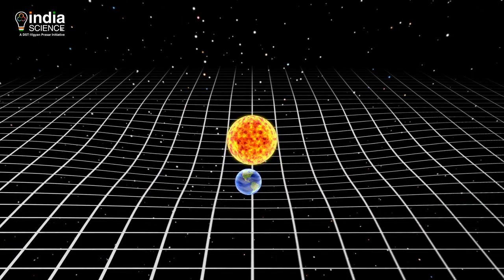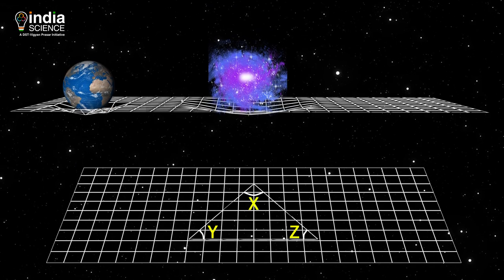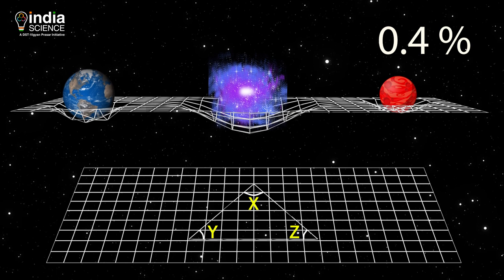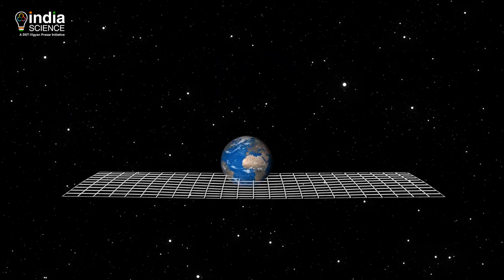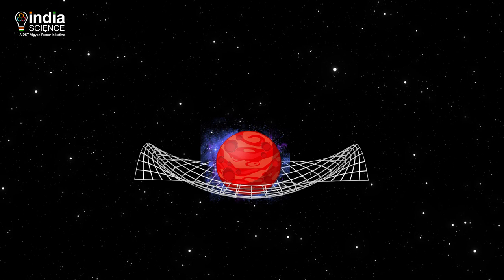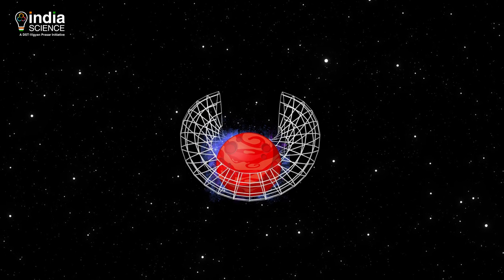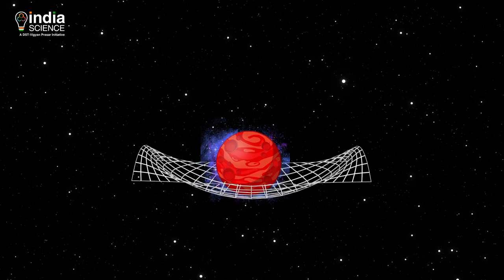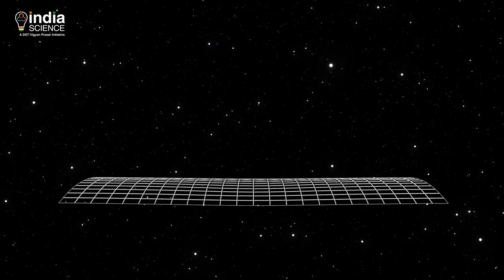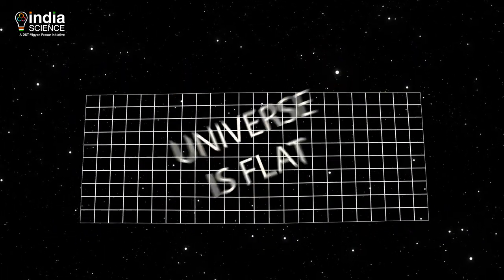Scientists measured this density. They found out that in both cases, the universe is flat, with a 0.4% margin of error. If the universe had just a little bit more mass and energy, then it would have been curved inwards and would have been finite. And if it had less density, then it would have curved outwards and would have been infinite. But the universe is flat.